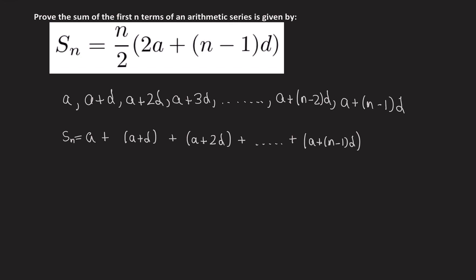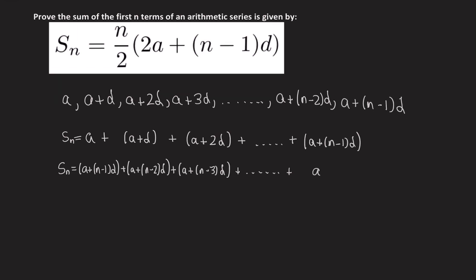Now what we're going to do may look a bit strange, but you'll see the reason for it later. We're going to rewrite this sum again, but written backwards. So the first term is a plus (n minus 1)d, then a plus (n minus 2)d, then a plus (n minus 3)d, carrying on with the last term just being a.